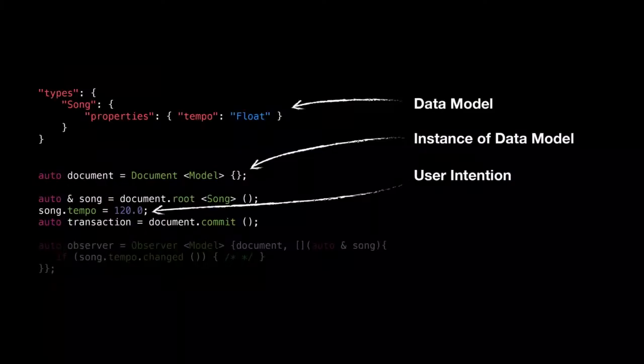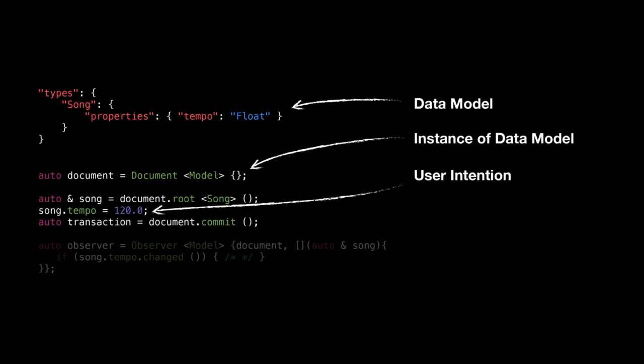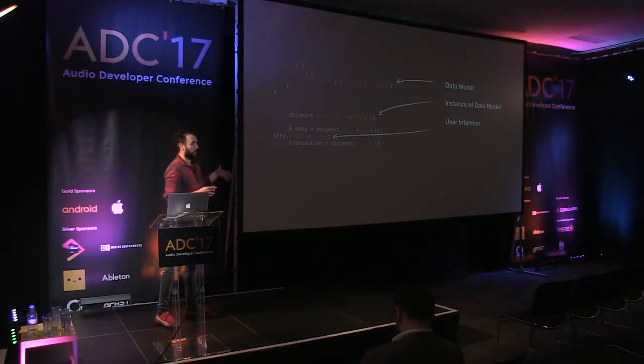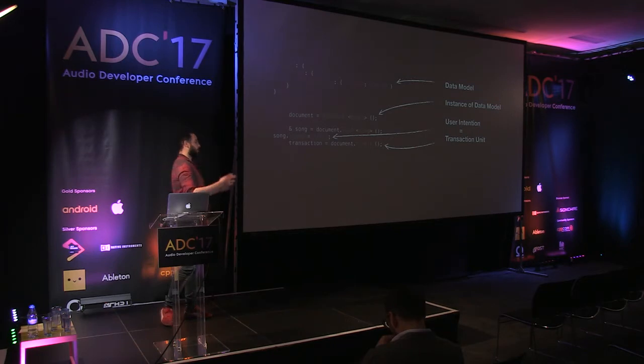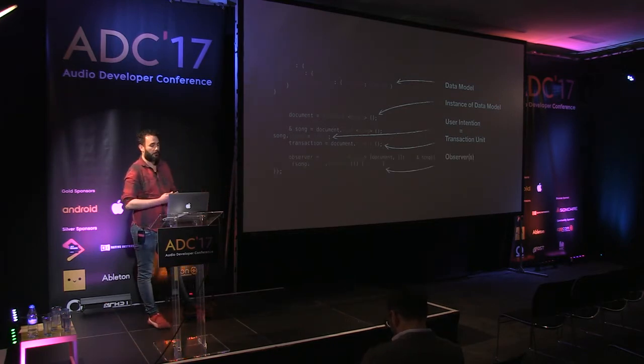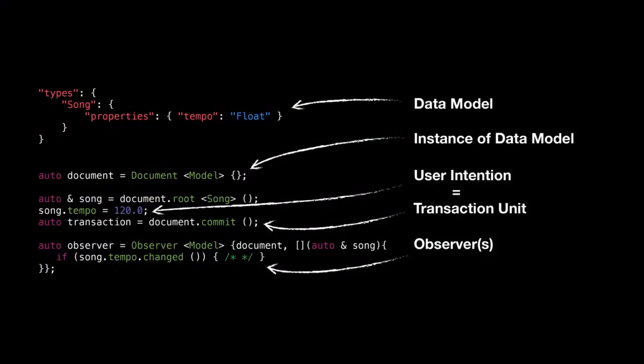Users want to modify documents — for example, directly changing the tempo. You can group different changes into a commit, just like in Git where a commit has a message representing your intention. This is a transaction unit that represents the user's intention. Finally, one or multiple observers can watch changes on those documents.